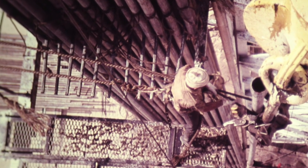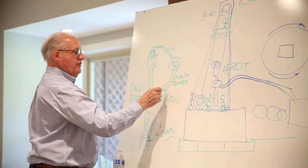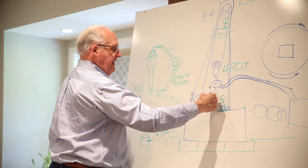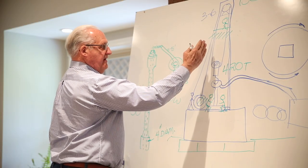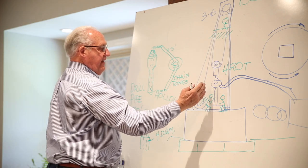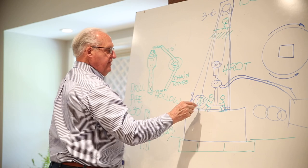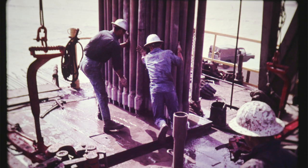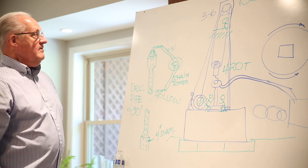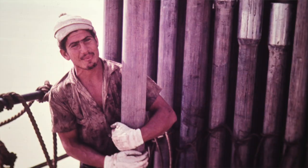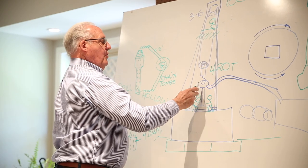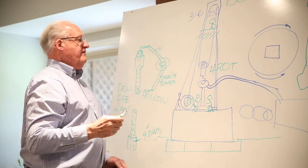They put it into something which is called a fingerboard. In other words, they pull this pipe out, they unscrew it with their chain tongs, they grab the pipe as it's being suspended in space. They grab that pipe, that 90-foot section, and they'll put it into one of these finger slots.